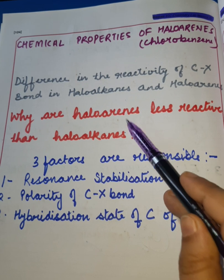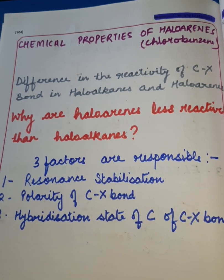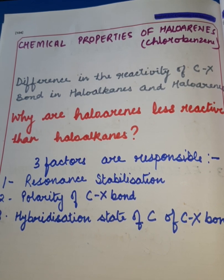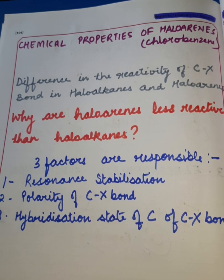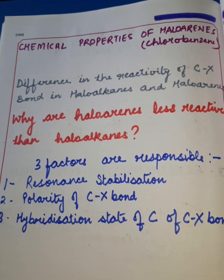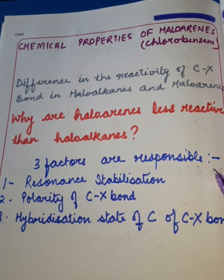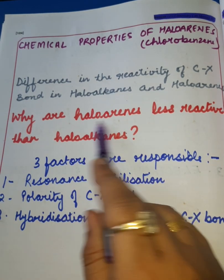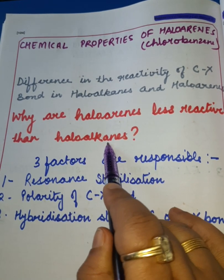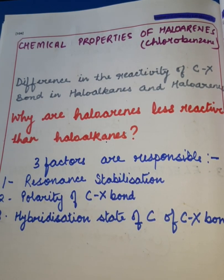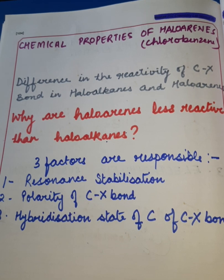Before we discuss why haloarenes are less reactive than haloalkanes, I would like to mention one important point. We already know that haloalkanes are a reactive class of compounds and they give a variety of reactions. I have already discussed their reactivity in my previous video on the chemical properties of haloalkanes, so you can watch that video to understand the concept. Now in this video we are going to compare the reactivity of haloarenes and haloalkanes. It is found that haloarenes are less reactive than haloalkanes — but why?